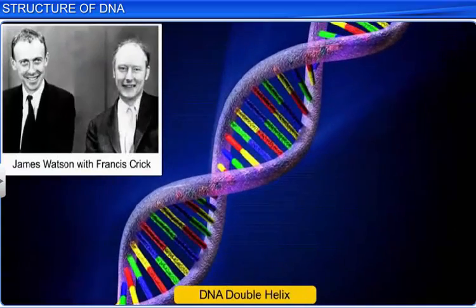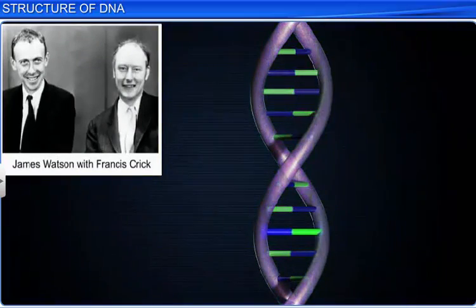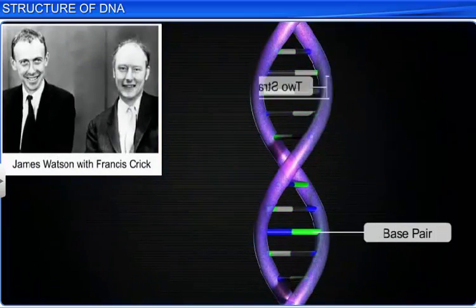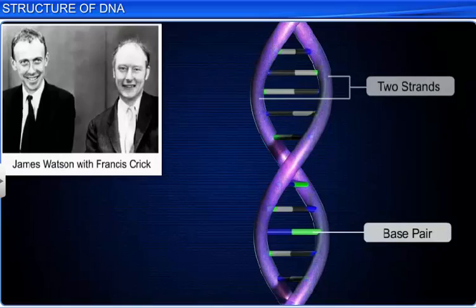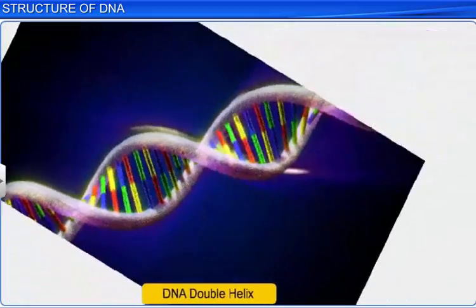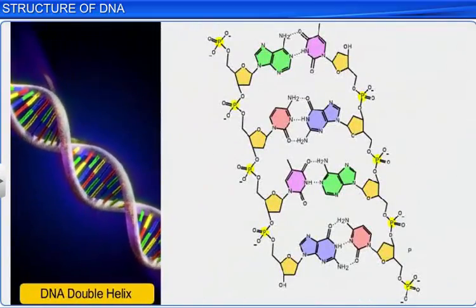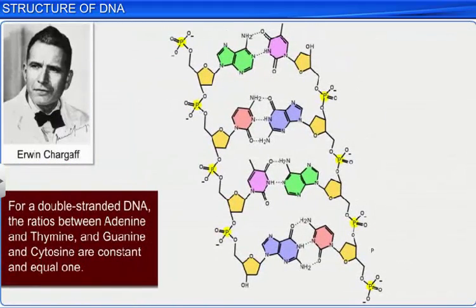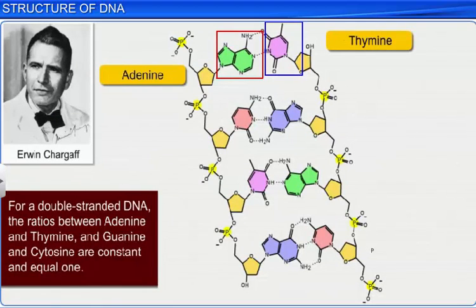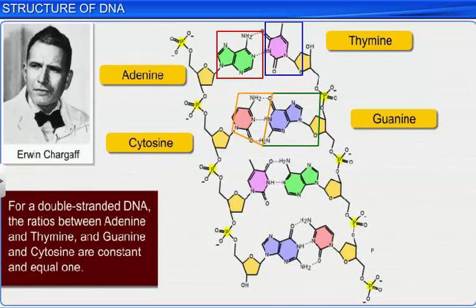Further, James Watson and Francis Crick proposed that base pairing existed between two strands of polynucleotide chains, which was a distinctive attribute of their proposition. This proposition was based on the observations made by Erwin Chargaff, who found that the ratios between adenine and thymine, and guanine and cytosine, are constant and equal to 1 for a double-stranded DNA.